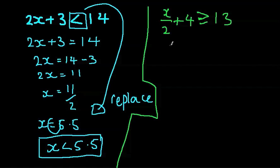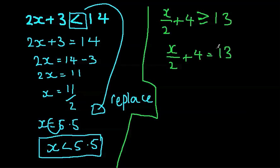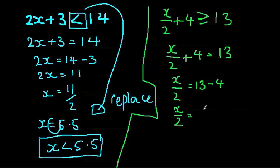Now we need to solve it just like an equation again. So let's go x divided by 2 plus 4 equals 13. What we need to do now is get rid of the 4 first. So x over 2 equals 13 minus 4. So we have x over 2 equals 9.